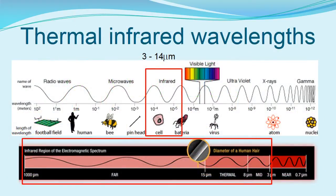All objects with temperatures above absolute zero emit electromagnetic energy. Thermal energy is emitted in the 3 to 14 micrometer range of the electromagnetic spectrum, referred to as the thermal infrared. It is invisible to our eyes but can be detected with thermal sensors. Objects vary in the way they store and emit that energy.